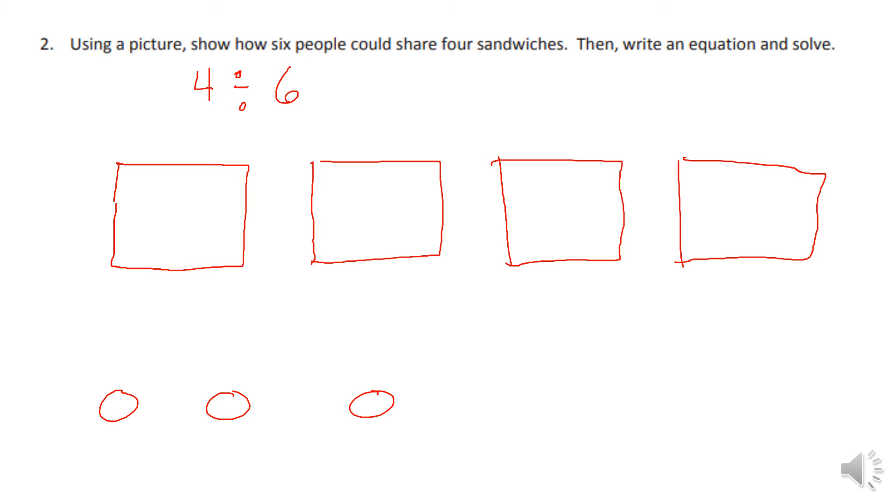Now my six people, I've got one, two, three, four, five, six. Instead of doing the lines this time, I'm going to number them. One, two, three, four, five, and six to make it a little easier. Now, since we have six people, we're going to split each one of these sandwiches into six parts.